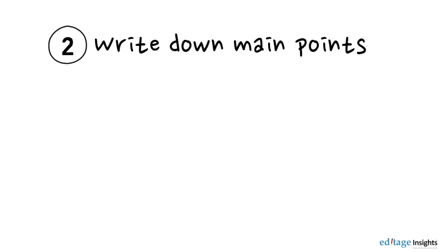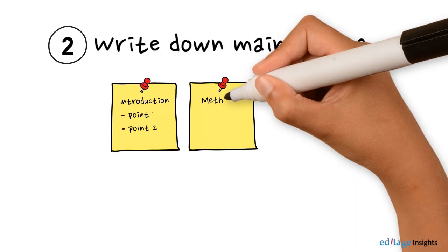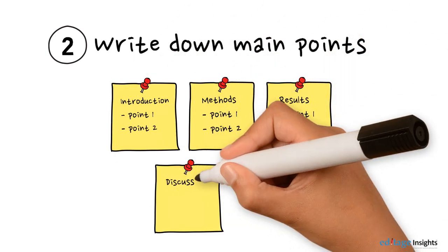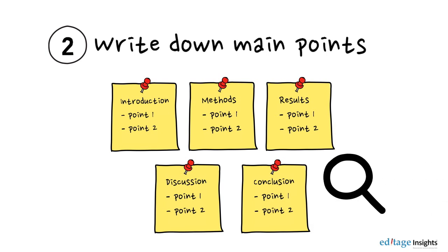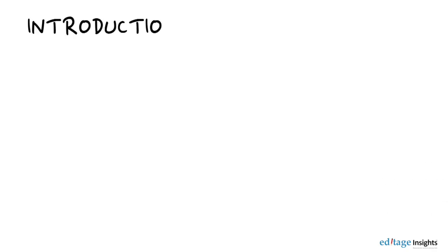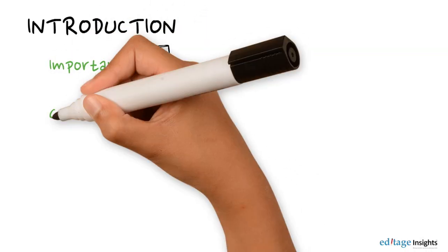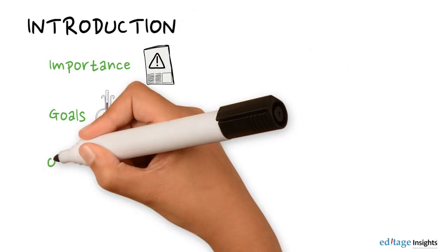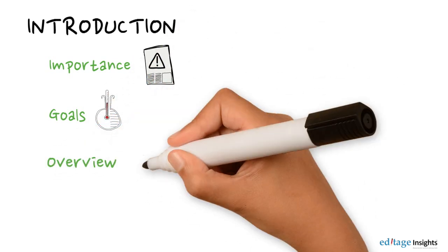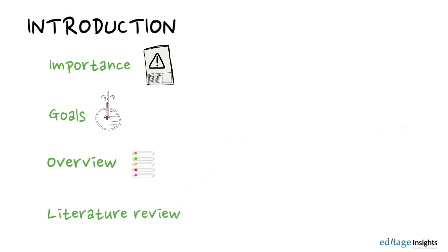Next, write down the main facts, points, or arguments that should be covered under each section. Let's take a closer look at all sections. What should you talk about in the introduction? The importance of your research, the goals of your paper, an overview of the organization of your paper, and a literature review.